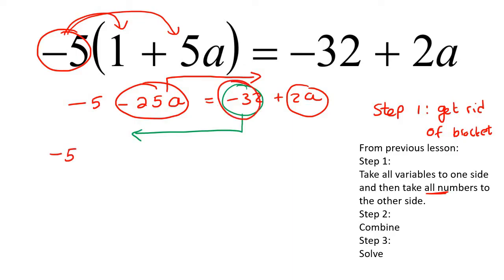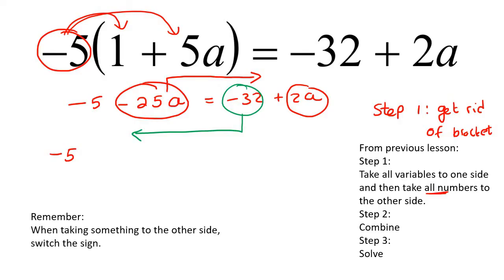This negative 32, we're going to bring it over. Remember what we said in the previous lesson: when you take something to the other side, you must switch the sign. So when we take this negative 32 over to the other side, that's going to end up becoming a positive 32. The 2a is already there on the right-hand side, and then this negative 25a is now going to be taken to the right-hand side where the sign switches, so it's going to become plus 25a.